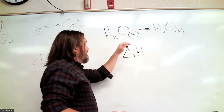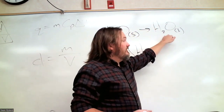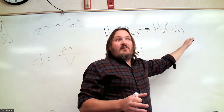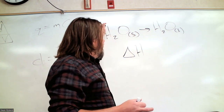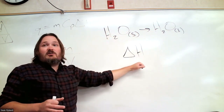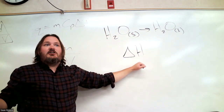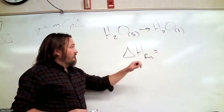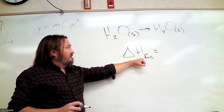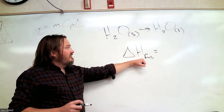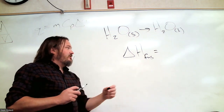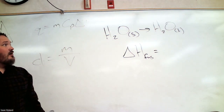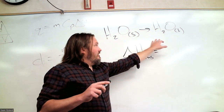In general, delta H is always going to be the change in internal bond energy between before and after - final minus initial. So anytime you have a change in phase like this, it's always going to have an associated energy. More typically, people tend to associate delta H with chemical reactions, but phase changes work just as well.